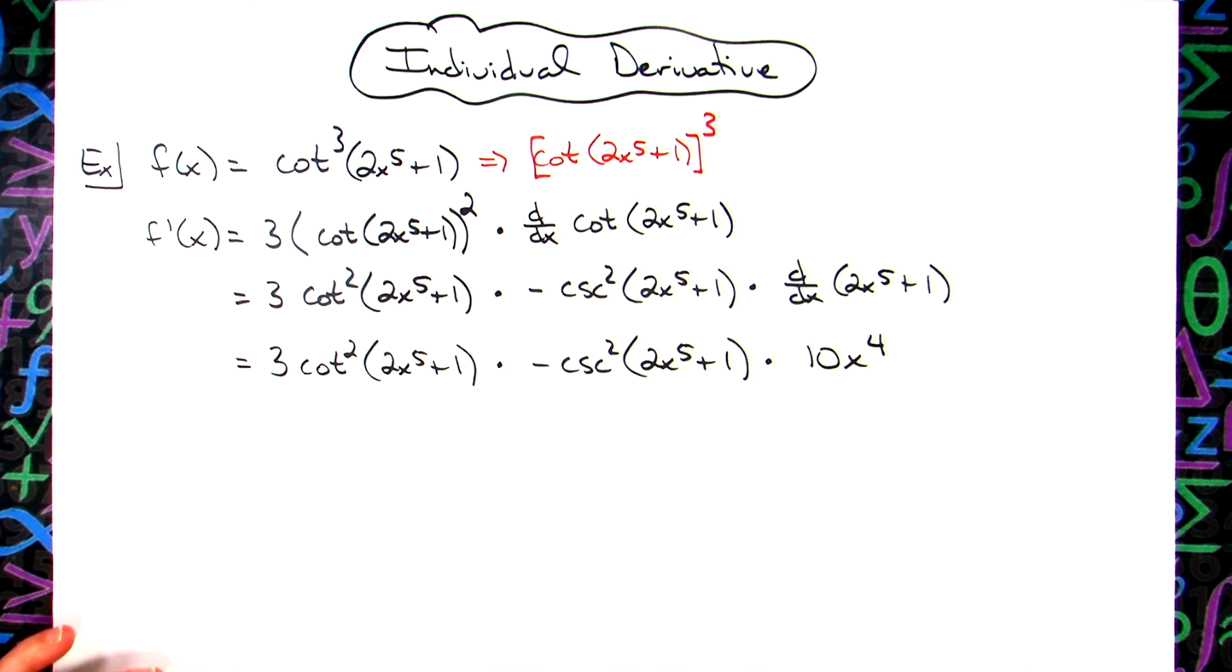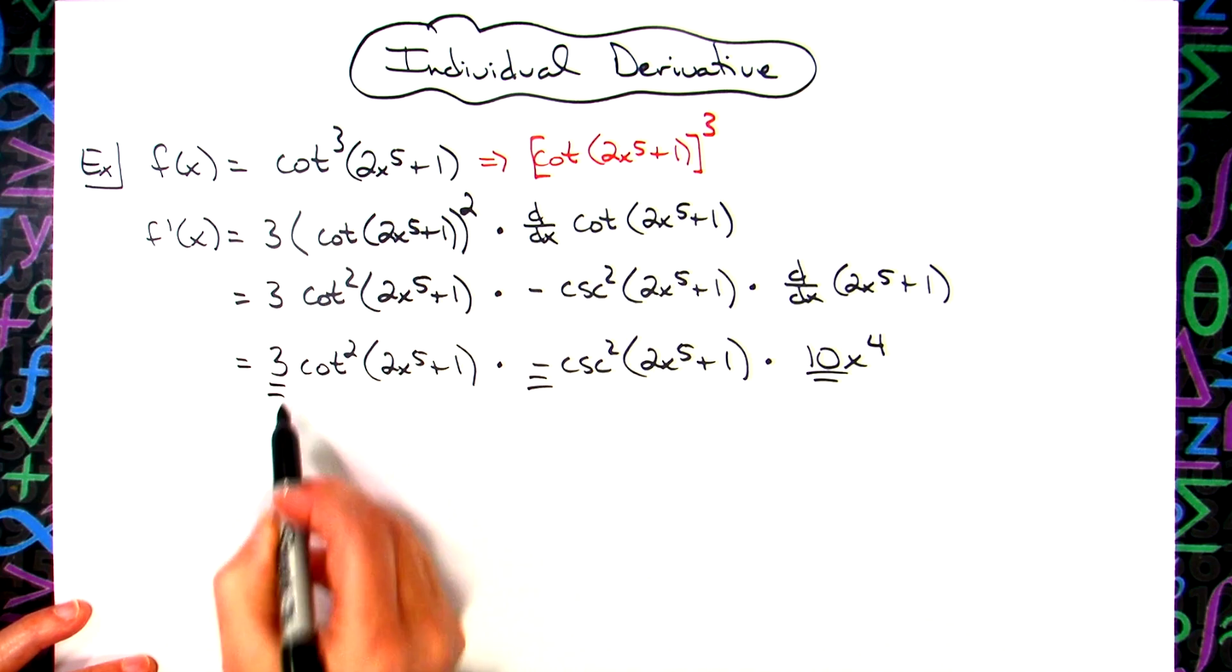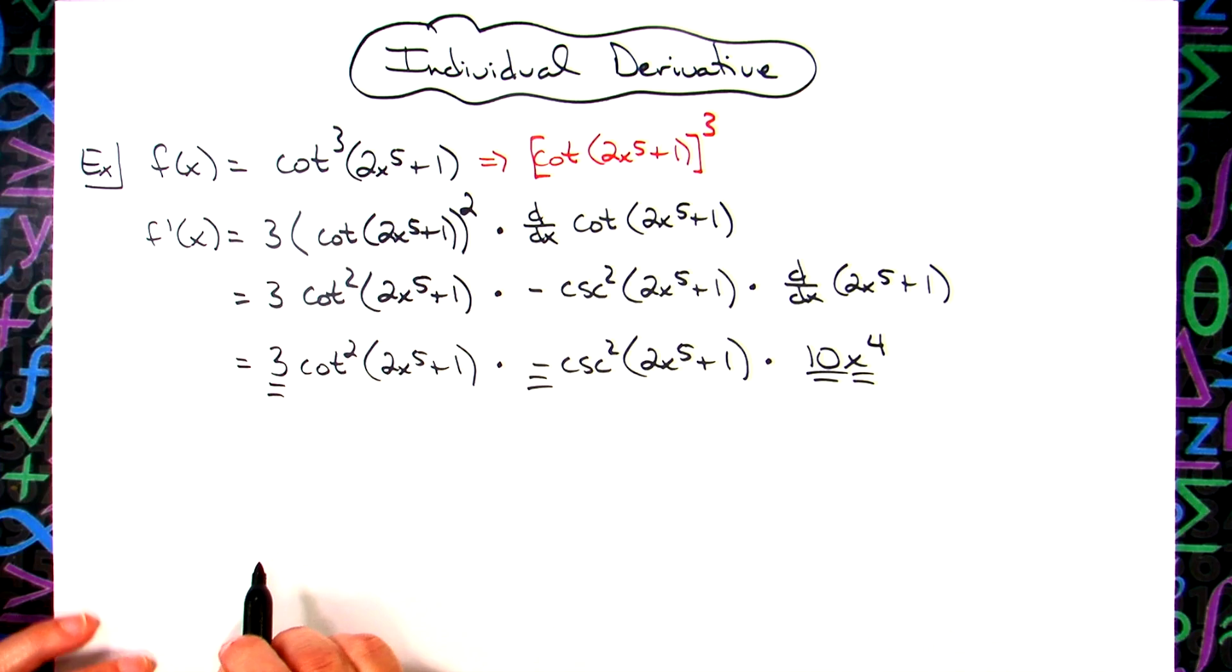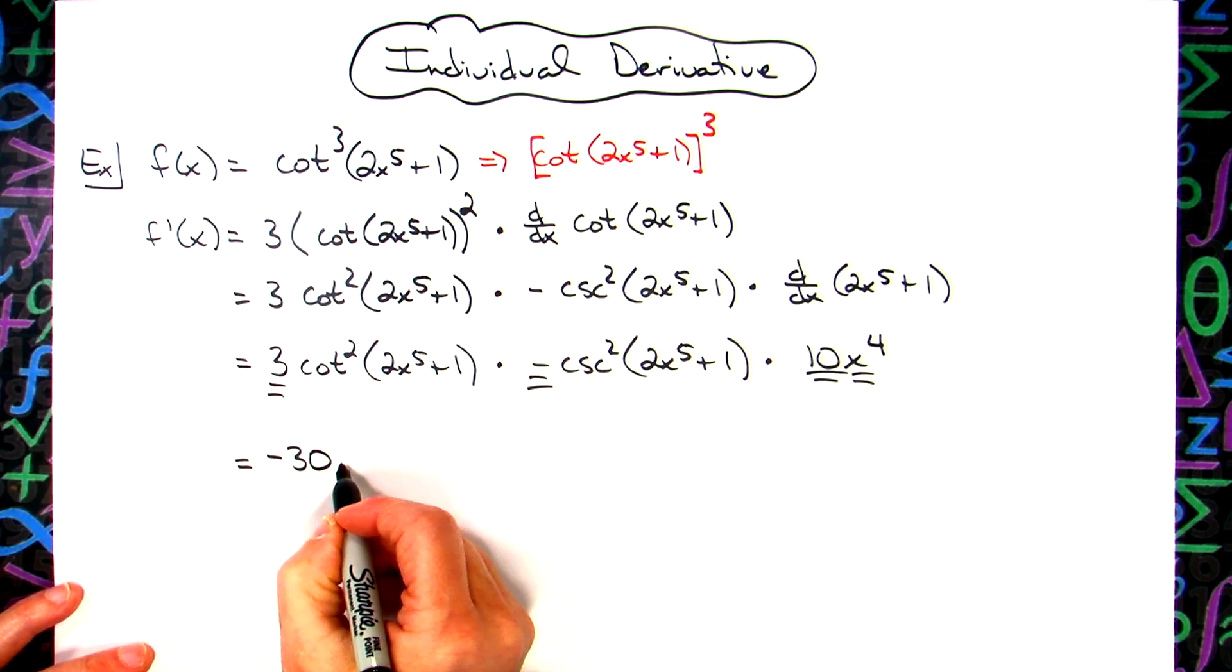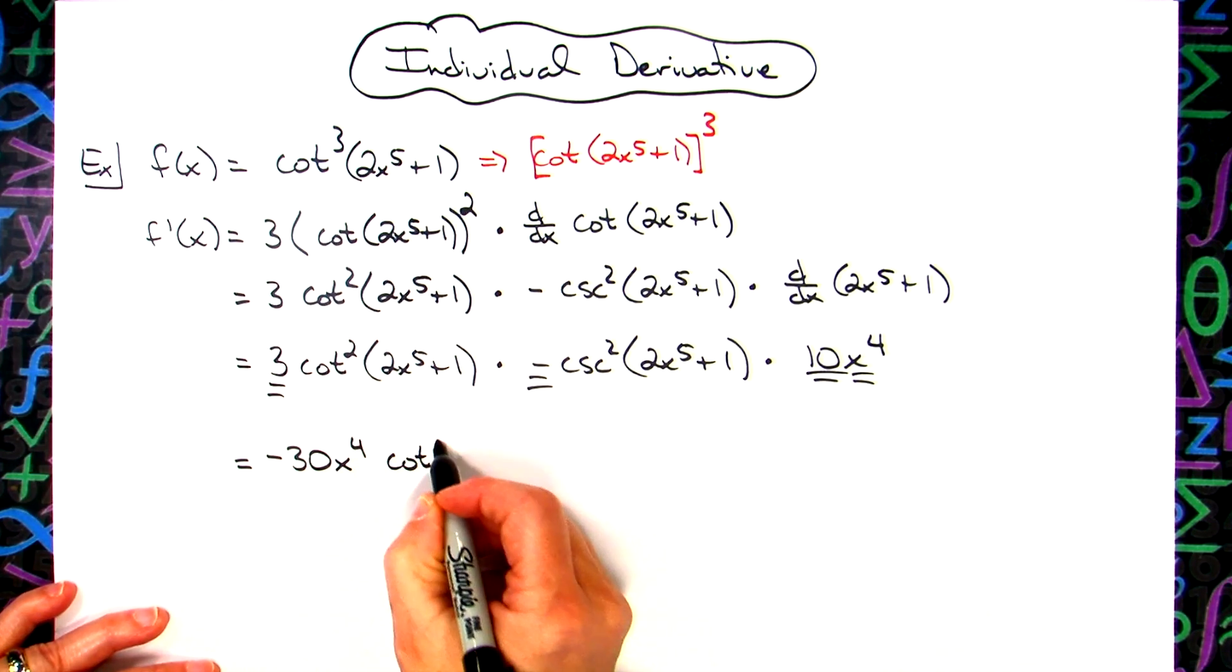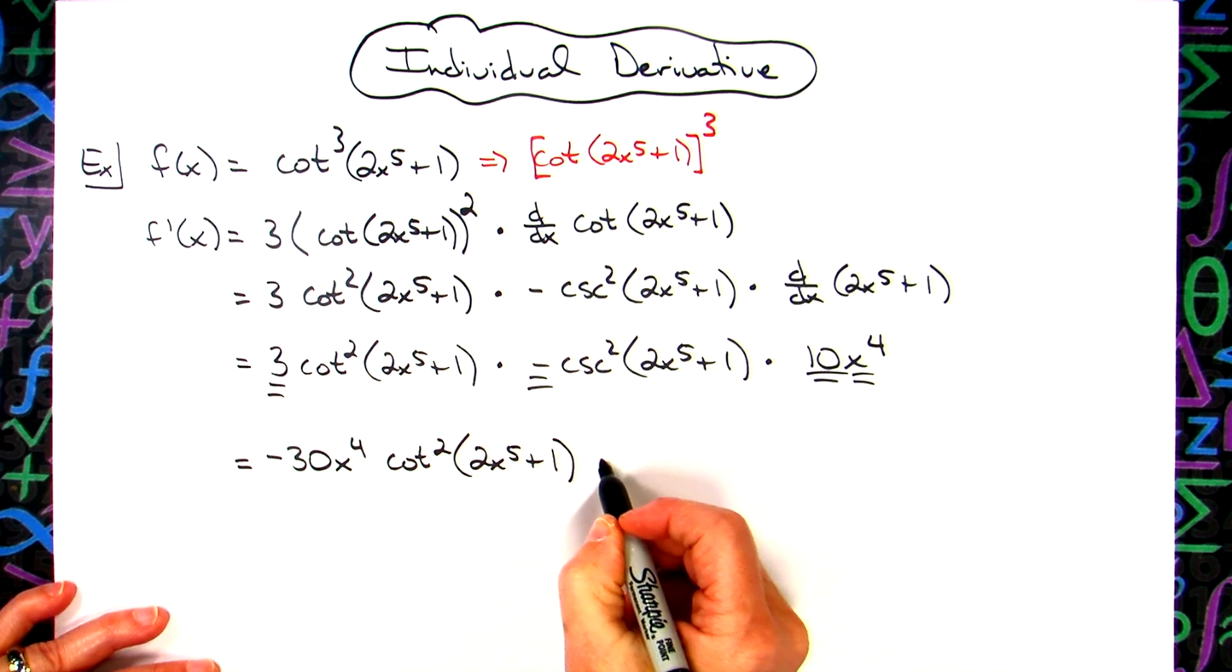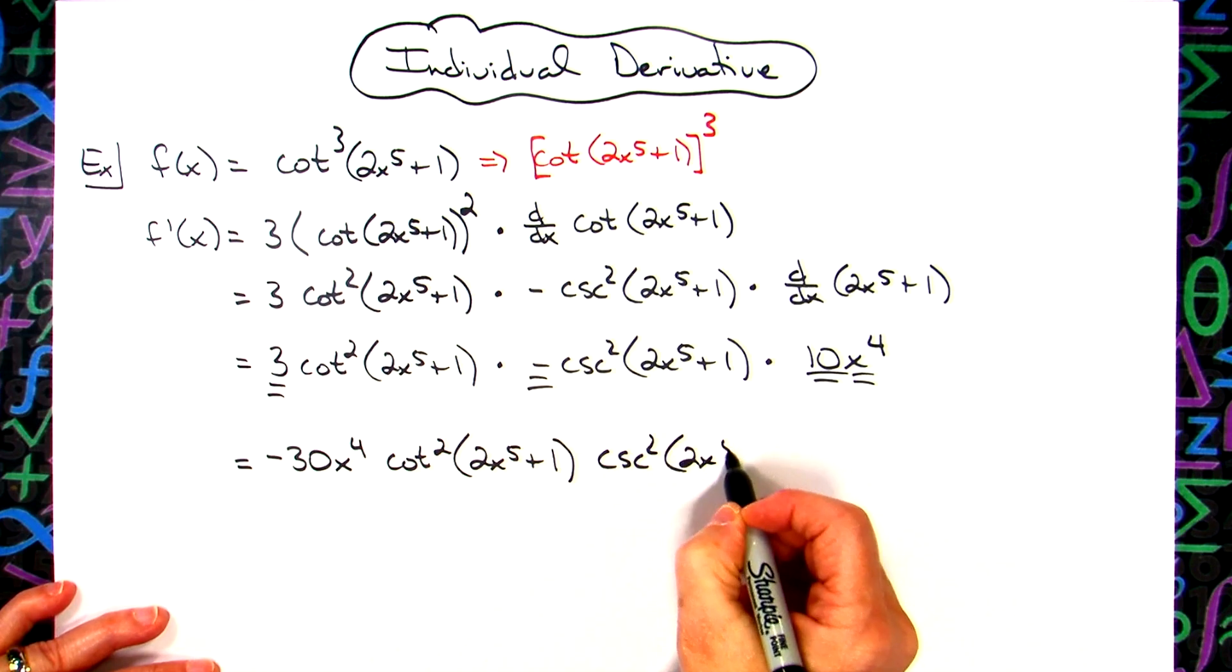Last step then would be nothing more than to just clean this up, make it look a little bit nicer. So I can take the 10, I can take the negative sign and the three, pull that all out in front. I think I'll go ahead and pull that x to the fourth out to the front as well. So we'll have a negative 30x to the fourth out in front, and then we'll have the cotangent squared of that 2x to the fifth plus one, and the cosecant squared of the 2x to the fifth plus one.